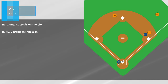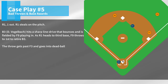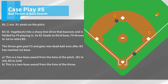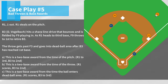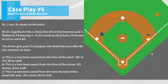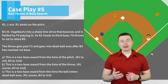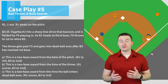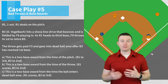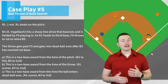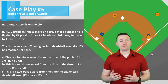Case play number five: R1, one out. R1 steals on the pitch. B3 hits a sharp line drive that bounces and is fielded by F9 playing in. As R1 heads to third base, F9 throws to first to retire B3. The throw gets past F3 and goes into dead ball area after B3 has reached first base. The correct answer is B — this is a two base award from the time of the throw, R1 scores, B3 to second. The reason it's from the time of the throw is not that this isn't the first play, but it's not the first play being made by an infielder. Since this play is being made by an outfielder, it's a two base award from the time of the throw.